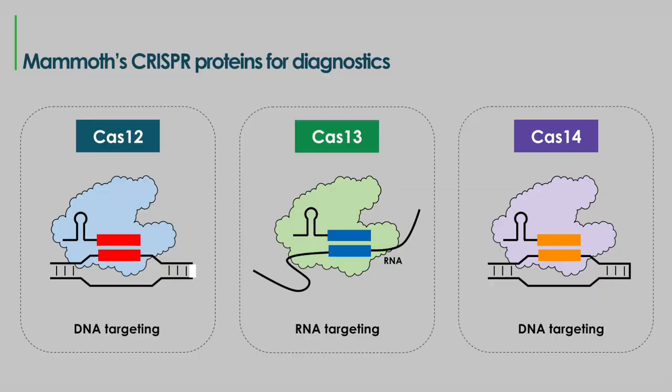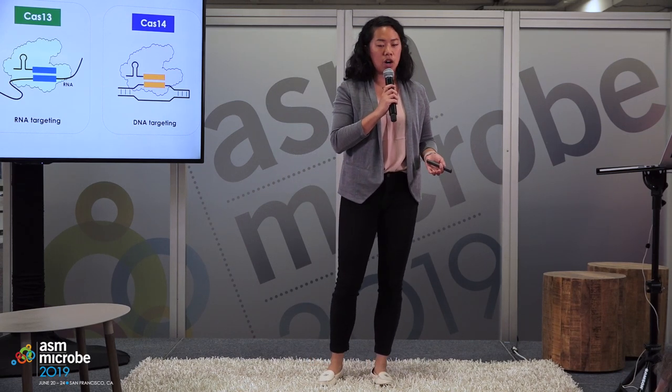There are many flavors of CRISPR proteins. There are proteins called Cas12, Cas13, and the most recently discovered Cas14. Traditionally, people have heard of the protein Cas9 that has been widely used for genome editing. But these new variants of Cas proteins contain this diagnostic capability that gives a real-time readout when you have a target nucleic acid present in your reaction. Some of them, like Cas12 and Cas14, are able to detect DNA, while others, like Cas13, are capable of detecting RNA.